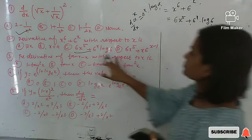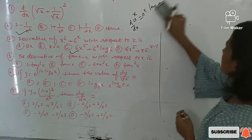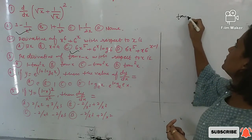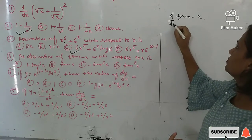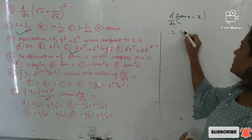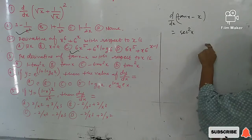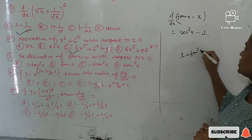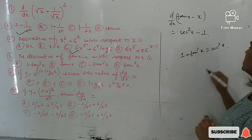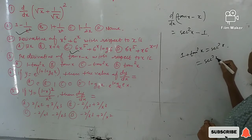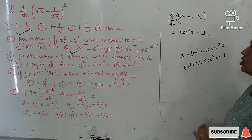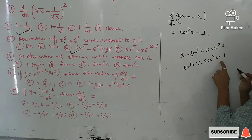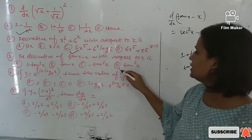Next question: find the derivative of tan x − x. The derivative of tan x is sec²x, and the derivative of x is 1. So the derivative is sec²x − 1. Using the identity 1 + tan²x = sec²x, we get sec²x − 1 = tan²x. So the correct answer is tan²x, option (d).